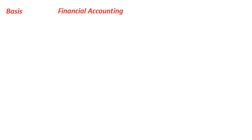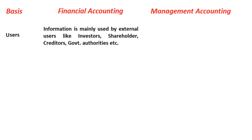Now we will understand the differences and distinctions between financial accounting and management accounting. The first basis is users. When you talk about financial accounting data, the information is mainly used by external users like investors, stakeholders, creditors, and government authorities. Financial accounting is basically oriented toward external users who use this data for making investment decisions, supplying material, and levying taxes.